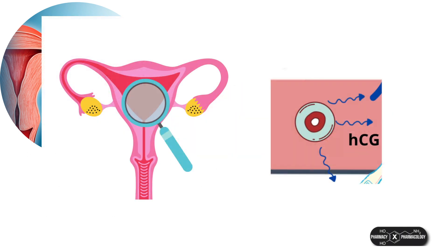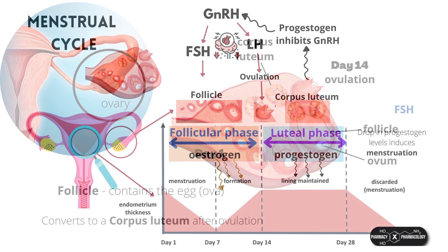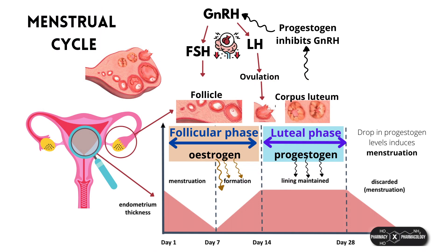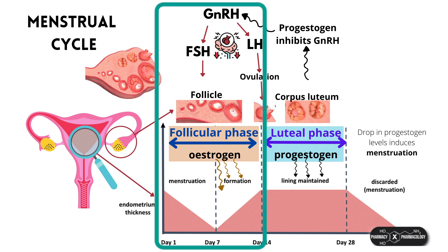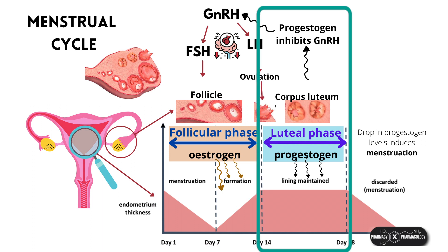Estrogen and progesterone induce cyclic regeneration of the endometrium — the lining of the womb — the key function of which is to receive a fertilized embryo, should there be one. A menstrual cycle occurs typically over 28 days, although this may vary between individuals, and can be divided into two halves: the first 14 days are called the follicular stage, and the second 14 days are called the luteal stage.